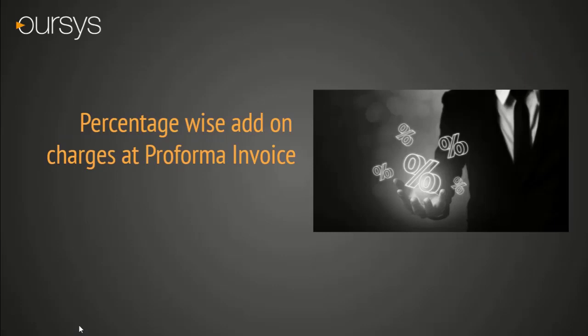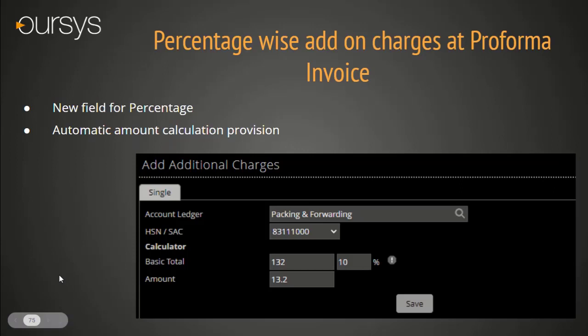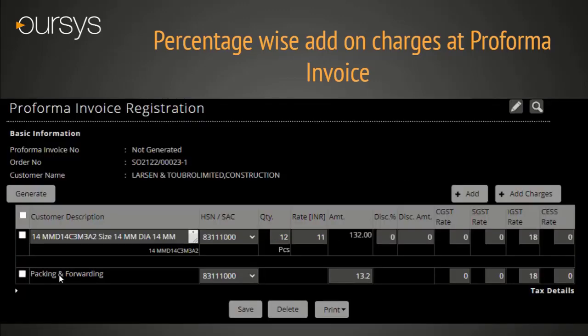Percentage-wise Add-on Charges at Proforma Invoice level. A percentage field has also been introduced in the proforma level. You can find this field in the Add-on Charges tab. The user can use it for calculation purposes or enter the amount directly. In the detail level, the value will be visible and can be modified.